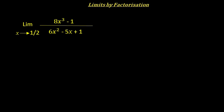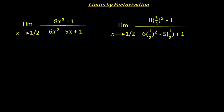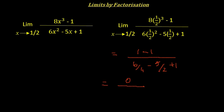As x tends to 1/2, we want to find the value of (8x³ - 1) / (6x² - 5x + 1). If we substitute x = 1/2, the numerator becomes 1 - 1 = 0, and the denominator becomes 6/4 - 5/2 + 1 = 3/2 - 5/2 + 1 = 0. So again we get an indeterminate 0/0 form.